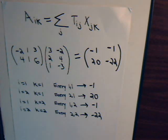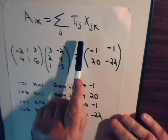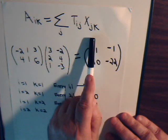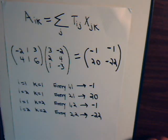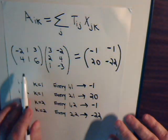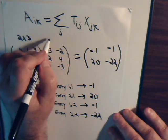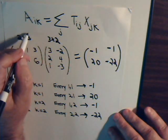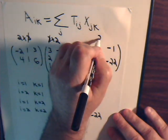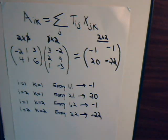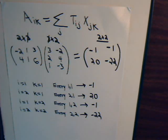That is how we multiply matrices together using this definition. Notice that the number of columns in the left matrix must equal the number of rows in the right matrix. In the next video, we'll discuss multiplication of operators and matrices from a different viewpoint, so come back and join us for that.